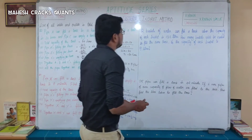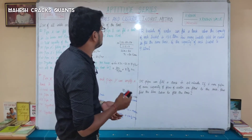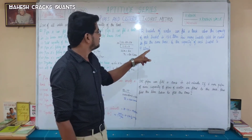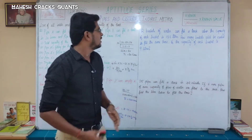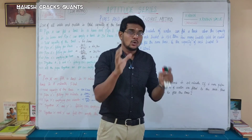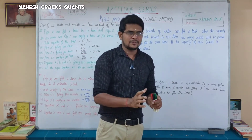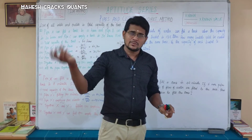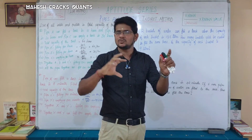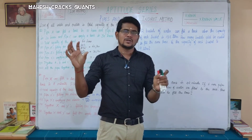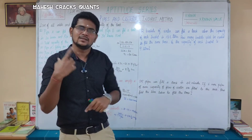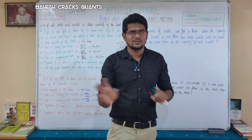Next: 12 buckets of water can fill a tank when the capacity of each bucket is 13.5 liters. How many buckets will be needed to fill the same tank if the capacity of each bucket is 9 liters? We use the indirect method: known by unknown. If bucket capacity decreases, the number of buckets needed will increase.